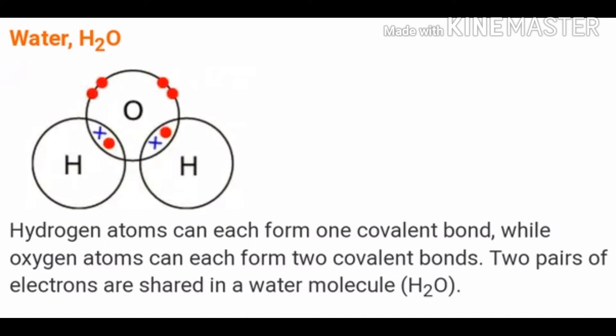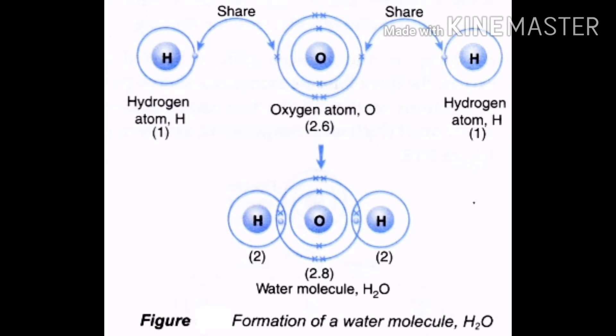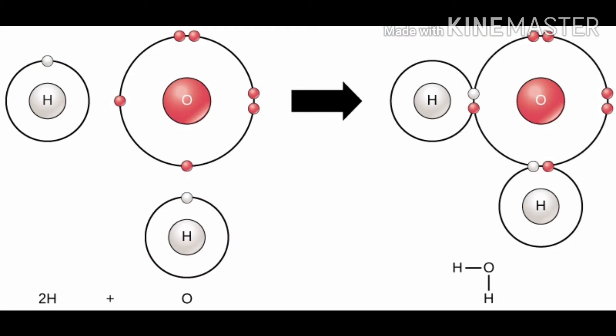Manjez, chemical bond don elements madhe kemhaan tayyar hoto, jeh maan electron dile zaatad, ghetle zaatad, kemhaan share kele zaatad. Aani octet state achi kele zaate. Jeh maan octet state achi hoto, temhaan to element unstable aslela stable hoto. Aani te doun elements madhe kemhaan bond tayyar hoto.